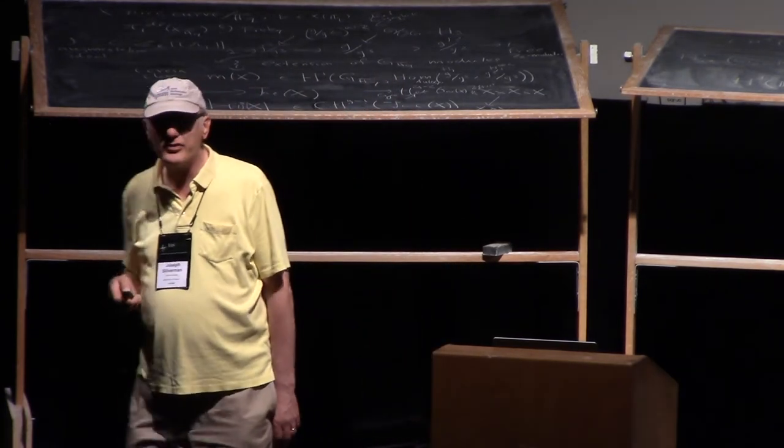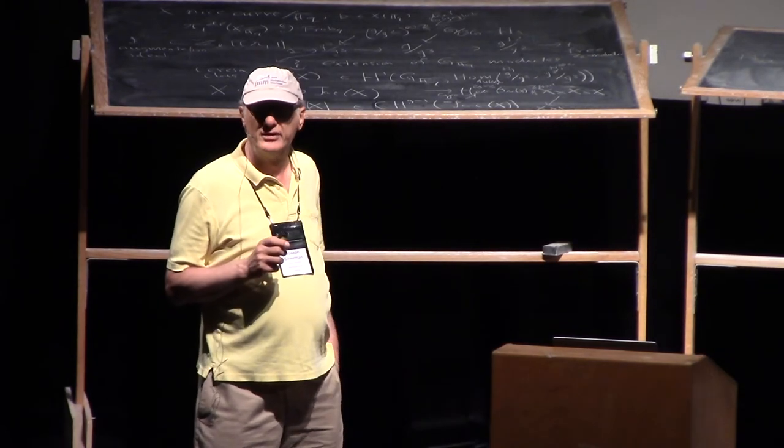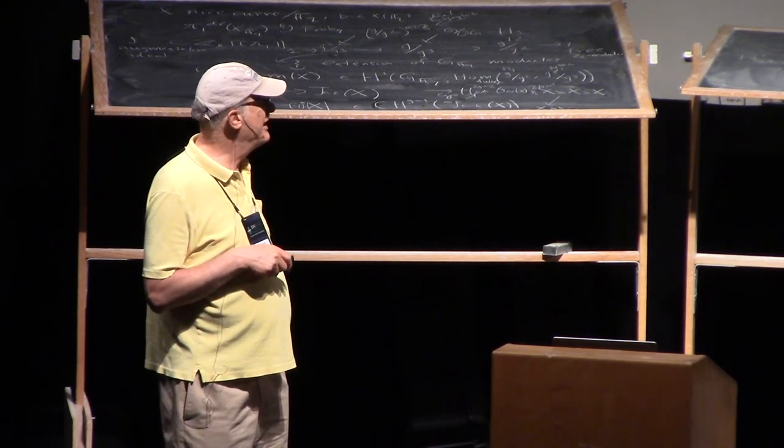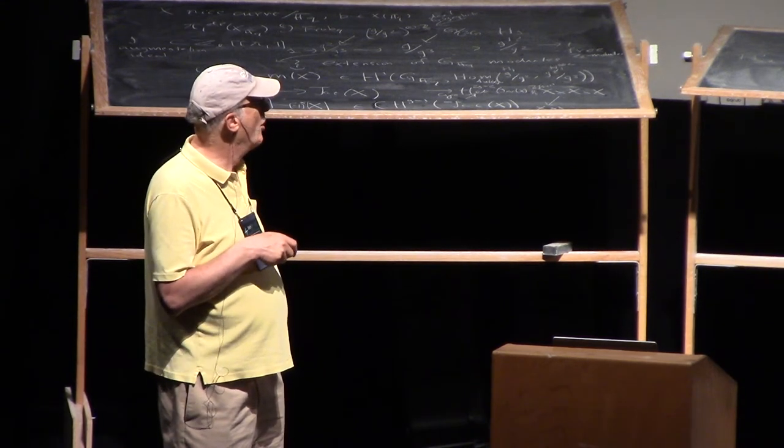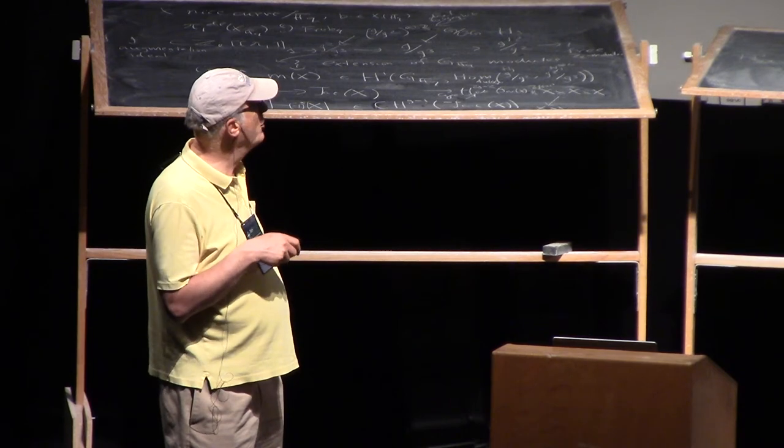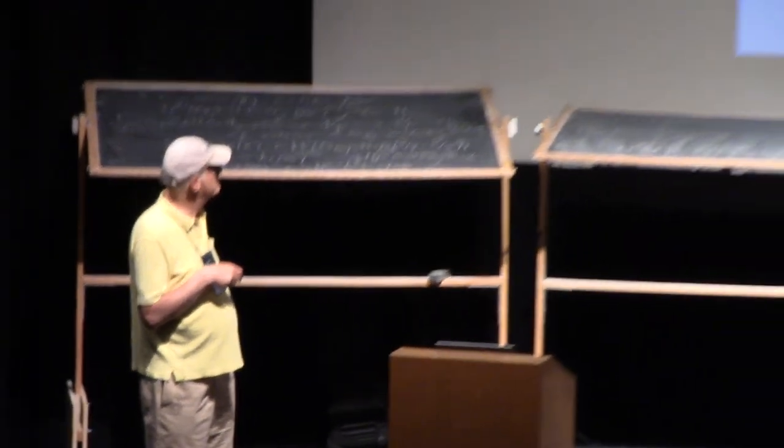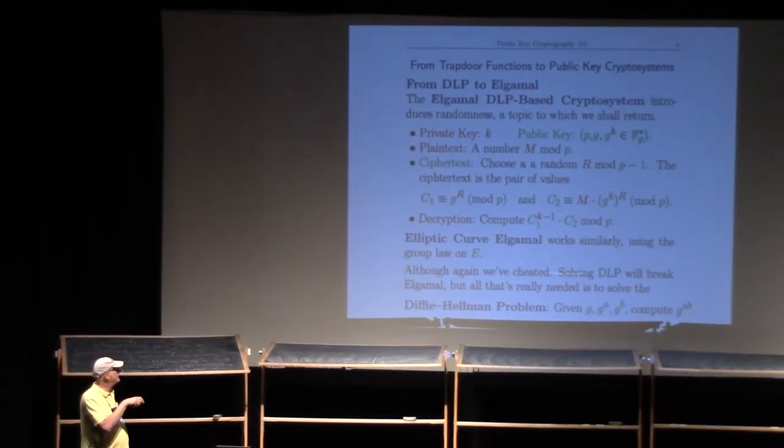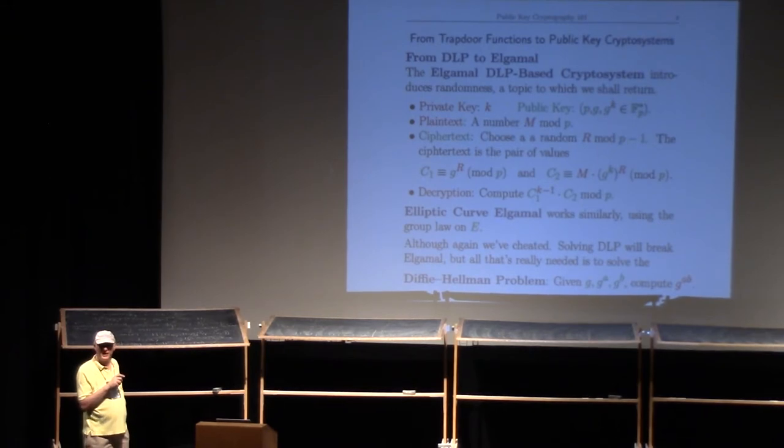The underlying hard problem that Eve has to solve is not actually finding Alice's secret K. What does the eavesdropper know? She knows G to the R. I claim that if you can solve this Diffie-Hellman problem, then you can break Eve's crypto system even without knowing K. The problem: I give you G, I give you G to some power A without telling you A, I give you G to some other power B without telling you B. I'm not requiring you to find A and B, just requiring you to compute G to the A times B power.